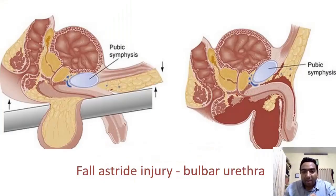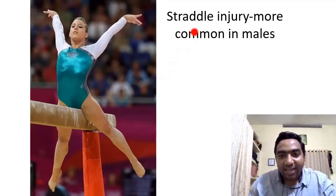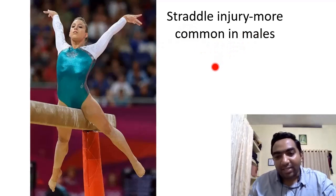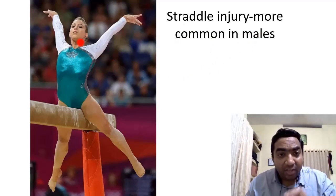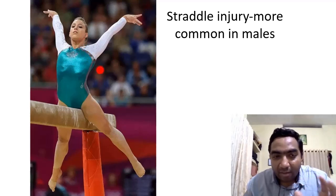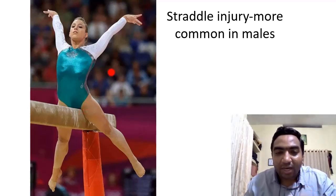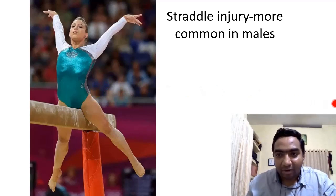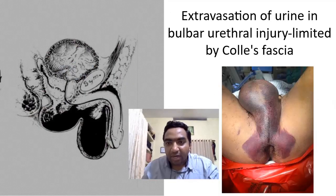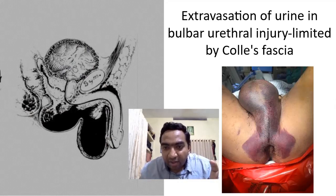Next is injury to the bulbar urethra. Injury to the bulbar urethra happens in a fall-astride (straddle) injury, and we can see a hematoma in the scrotal and perineal region. This is classical of bulbar urethra injury. Straddle injury is more common in males — this is one of the reasons you will not see male gymnasts in a splits pose, as bulbar urethral injury would be very common. There is extravasation of urine in bulbar urethral injury.